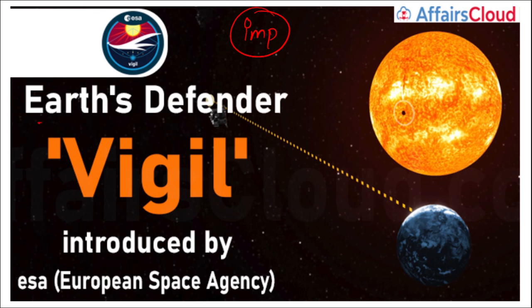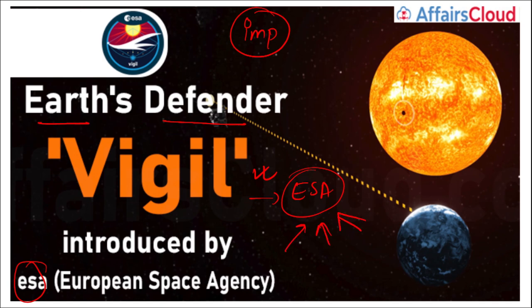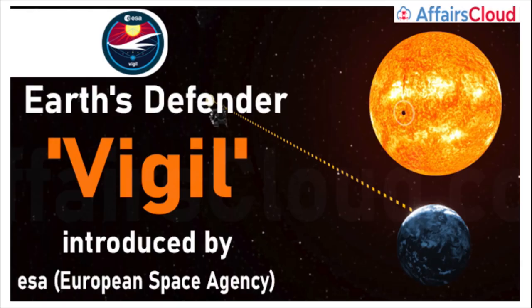Earth's Defender has been named Vigil, introduced by ESA — the European Space Agency. Vigil will warn us about incoming solar storms and solar flares. During solar storms, satellites and electronic equipment can be destroyed or stop working. For example, a communication satellite disrupted by a solar flare could cut off communications for a region until repaired or replaced.